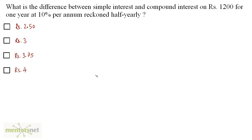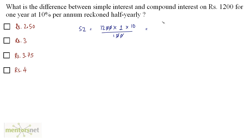What is the difference between simple interest and compound interest on Rs.1200 for one year at 10% per annum reckoned half-yearly? Let us first calculate the simple interest. It is equal to PNR upon 100. The principal is Rs.1200, N is one year, R is 10% upon 100. So that is equal to Rs.120, the simple interest.